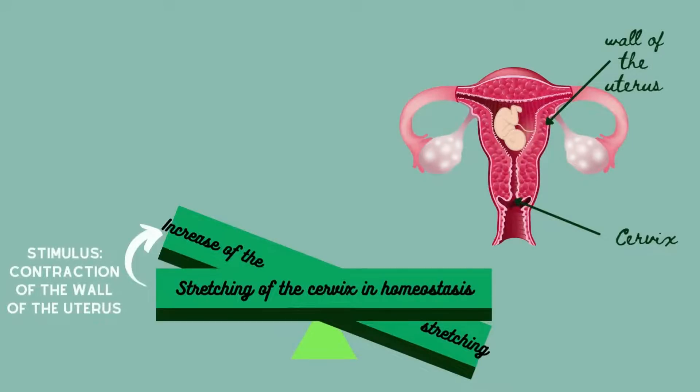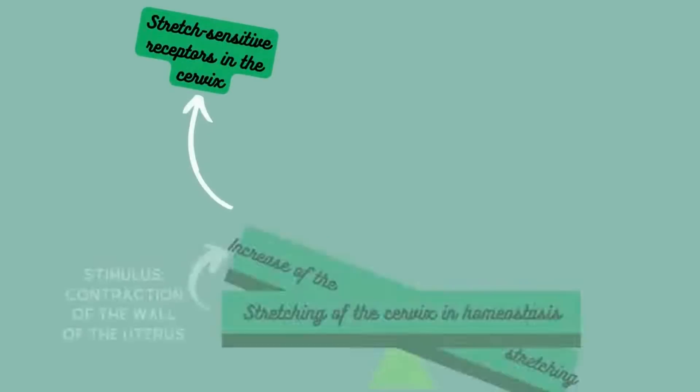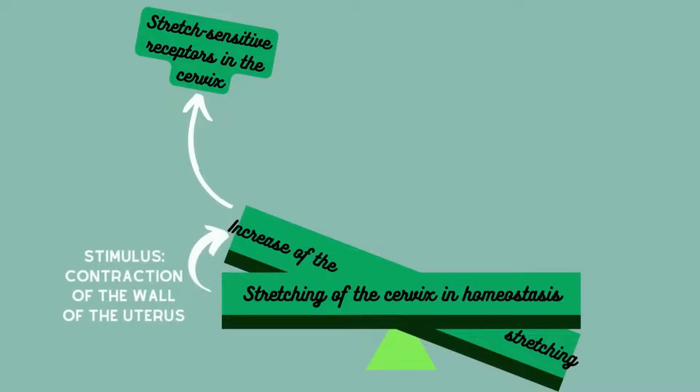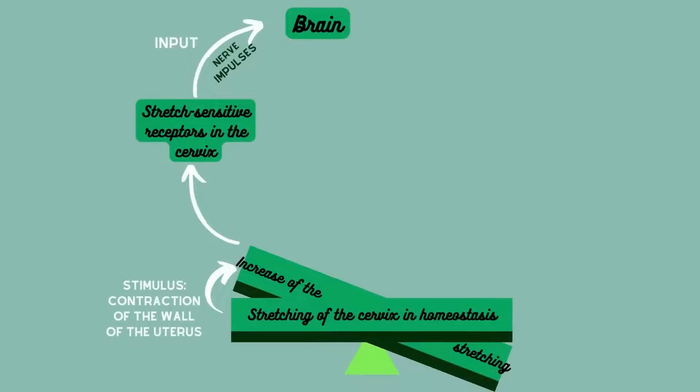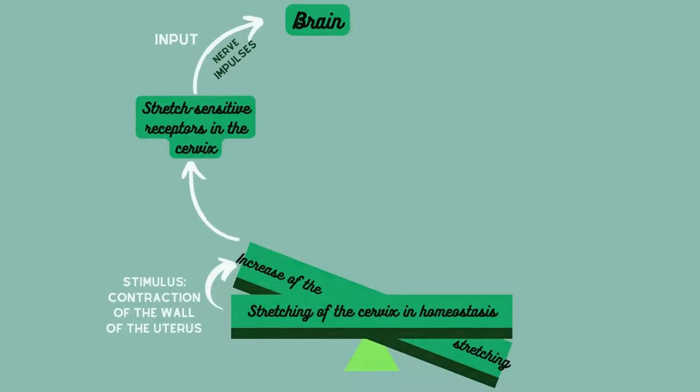This change is detected by the stretch-sensitive receptors in the cervix that will send nerve impulses to the brain. The brain will interpret this input and release oxytocin into the blood.